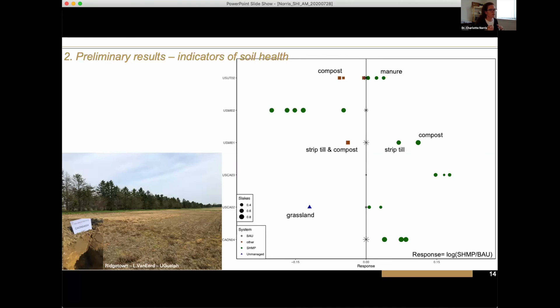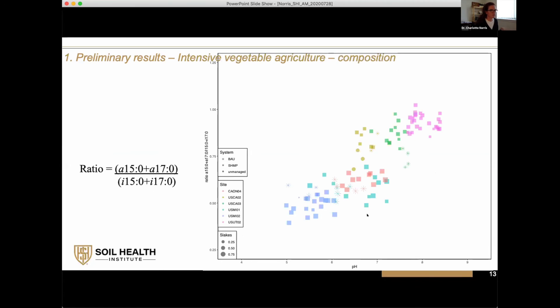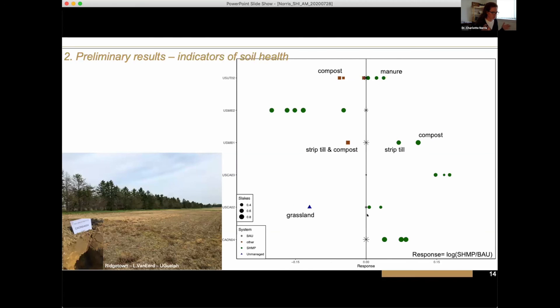The larger points represent more stable aggregate. On the bottom, each site is represented along the y-axis. The first one, we have the addition of cover crops at this Canadian site, and we find we have an increase in ratio. Then a California site has addition of soil health management practices, and we get this increase in ratio. But it's not a clear story because there was also a grassland system there, and it had a decrease in ratio.